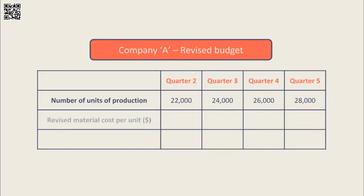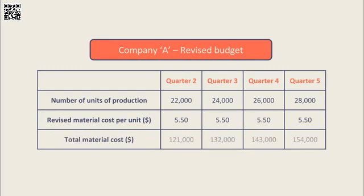By applying the revised cost of material of $5.50 per unit to the number of production units for Q2 to Q5, material costs in each quarter should total $121,000 in Q2, $132,000 in Q3, $143,000 in Q4 and $154,000 in Q5.